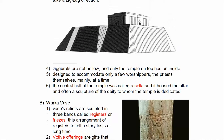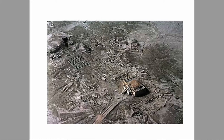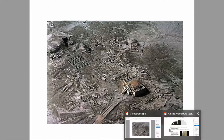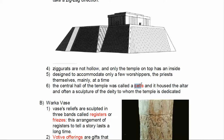Inside of the temple, usually right in the very center of the building — not near the outside — is where the statues to the deities would be placed and where offerings would be made. This location within a temple is called a cella, C-E-L-L-A. We'll see this word throughout Greek architecture as well. So let's pause here and then we'll look at a few more art and architecture terms from the Mesopotamian period in the next installment.